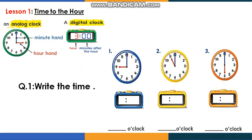In the previous lessons we learned that in the analog clock there are two hands — one short and one long. The short one helps you read the hour and the long one helps you read the minute. We call the short one the hour hand and the long one the minute hand.